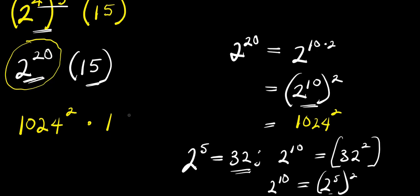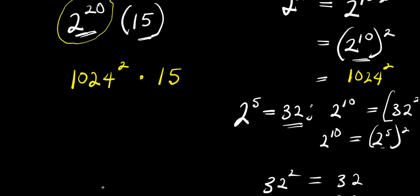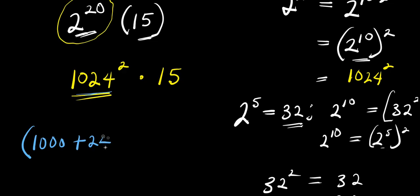Now, that means 2 to the power of 20 here is the same thing as 1024 to the power of 2, and this would then multiply 15. So, how do we find the value of 1024 to the power of 2? We can decide to express 1024 as 1000 plus 24. Of course, 1000 plus 24 is 1024, then raise it to the power of 2, then multiply by 15.